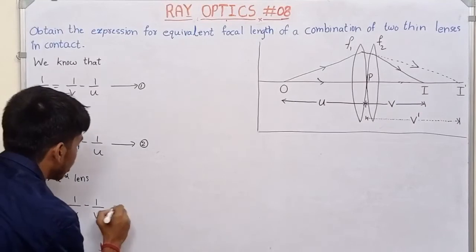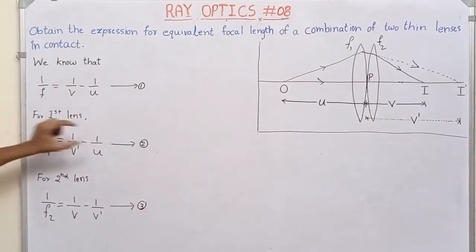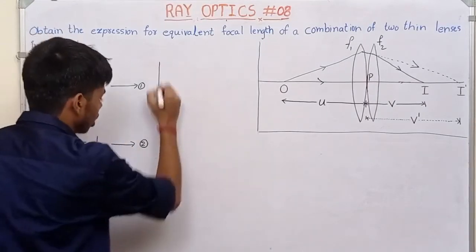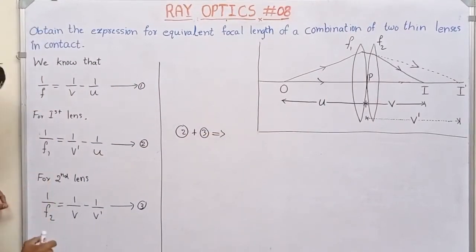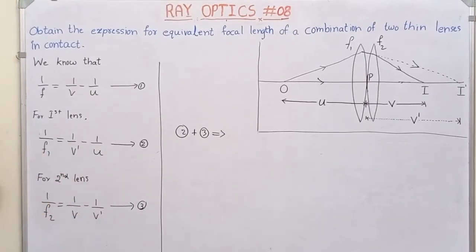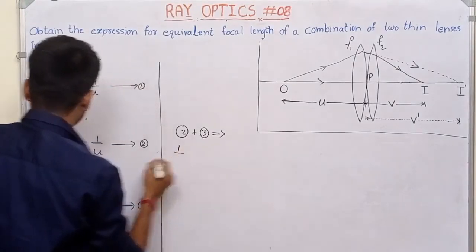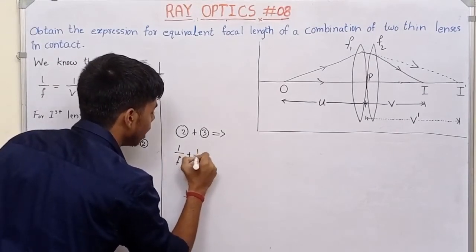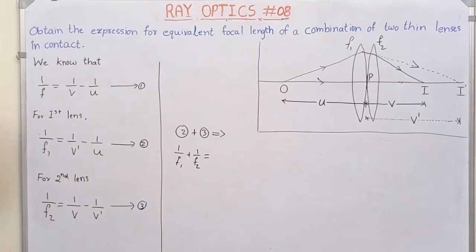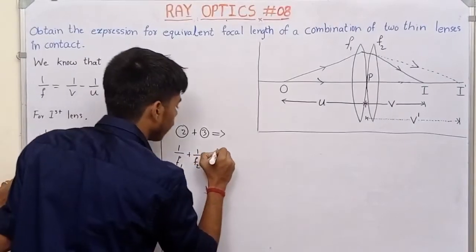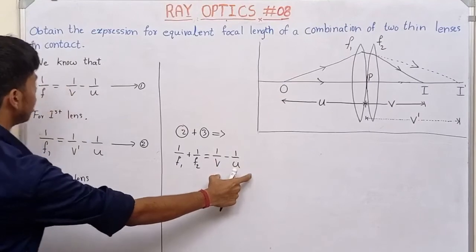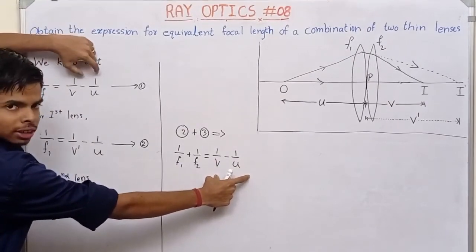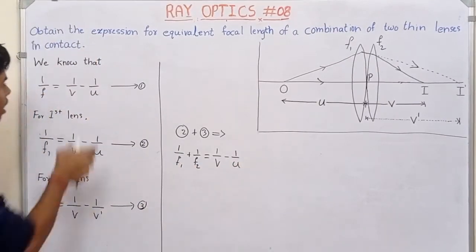Equation number 3. Now add equation number 2 and equation number 3 together. When we add them, the middle term — v-dash — cancels out, since it appears on both sides. Left hand side: 1 by f1 plus 1 by f2 is equal to 1 by v minus 1 by u.